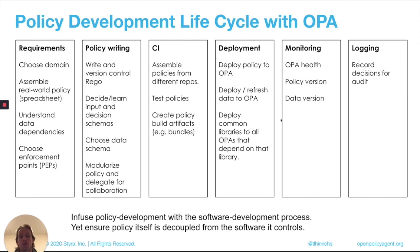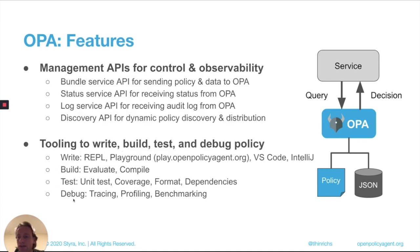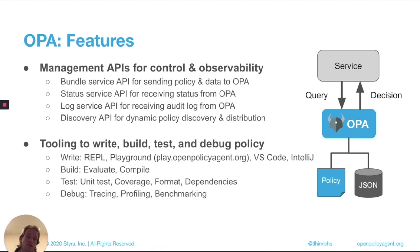OPA provides a number of tools to help you work through and provide that policy development lifecycle. When you're writing policy, OPA provides a REPL, there's a Playground, and VS Code and IntelliJ plugins — all of which help you write policy more effectively. There's a Build, Evaluate, Compile step. There's unit testing — just like you write tests for code, you should be writing tests for policy. You can check coverage, format, and do dependency analysis. There's debugging too, so if you want to trace a decision and understand why it was made the way it was, you can do that. You can also profile and benchmark if you're interested in performance.